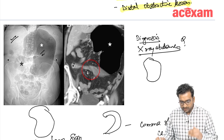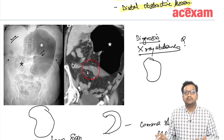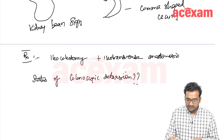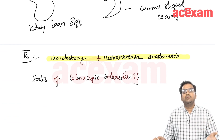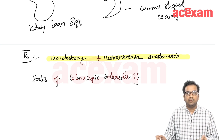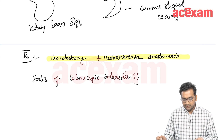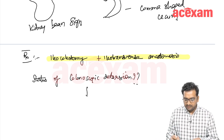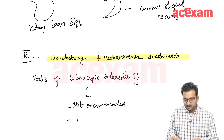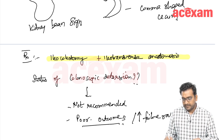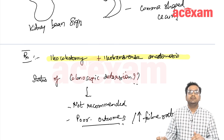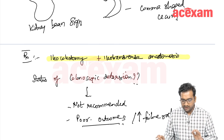The treatment is resection of the terminal ileum and the cecum — we have to do ileocolectomy, followed by ileotransverse or ileocolic anastomosis. In sigmoid volvulus, we initially detort the volvulus and then go for elective surgery. Here, colonoscopic detorsion is generally not recommended because there is a poor outcome and increased failure rate. That is why we straight away go for surgery, resect the portion, and do ileocolic anastomosis.